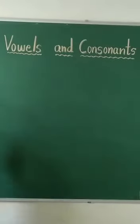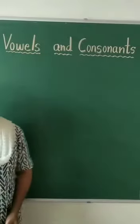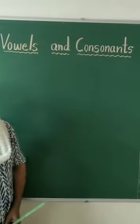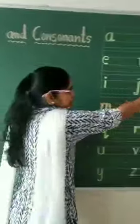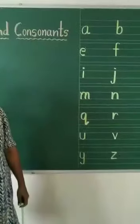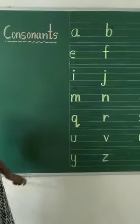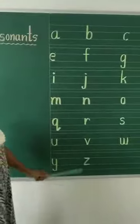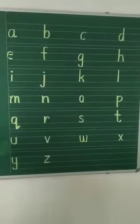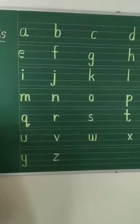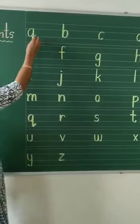Okay, children. There are 26 letters in the English alphabet. In these 26 letters, 5 letters are vowels. I am going to show you which ones are the vowels.